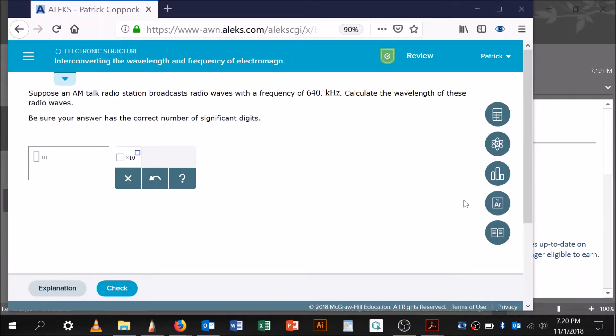Okay, so I had a request from a student to talk about interconverting the wavelength and frequency of electromagnetic radiation. So here's a question from there, and it says, suppose an AM talk radio station broadcasts radio waves with a frequency of 640 kilohertz. Calculate the wavelength.